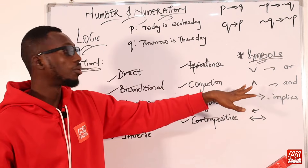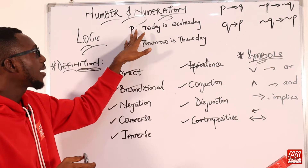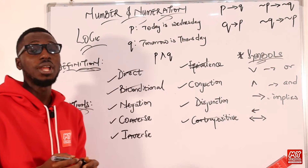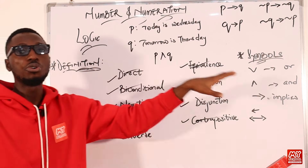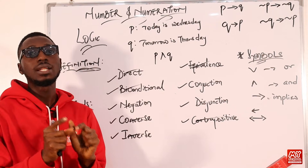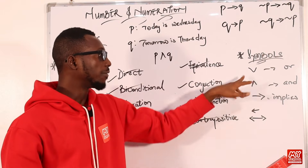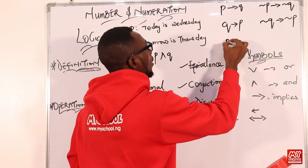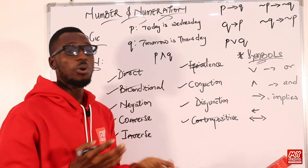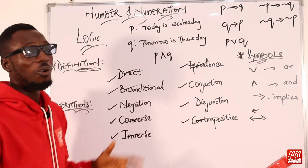Conjunction and disjunction: conjunction means 'and.' So that means P and Q — just like your intersection. For example: today is Wednesday and tomorrow is Thursday — that is conjunction. You are bringing two statements together using the logical connective 'and.' For disjunction, you use the logical connective 'or' — today is Wednesday or tomorrow is Thursday. These are the symbols we will be using as we move deeper into the topic of logic.